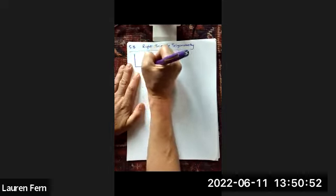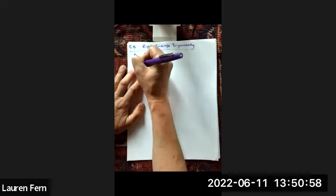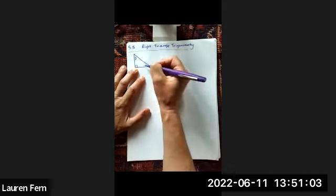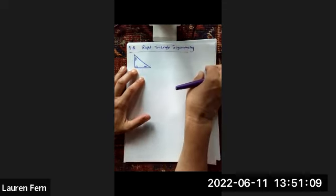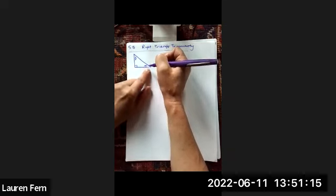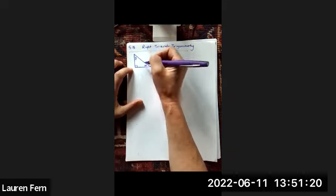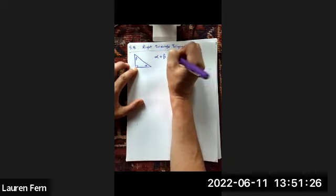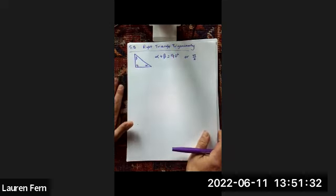If I have a right triangle, I'll call this angle alpha and this angle beta. We know that alpha plus beta add up to 90 because we know that the sum of the angles in a triangle add up to 180 degrees. How do we look at the sine, cosine, and tangent? First off, alpha plus beta is equal to 90 degrees or pi over two — those are called complementary angles.